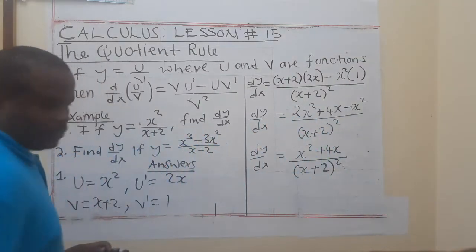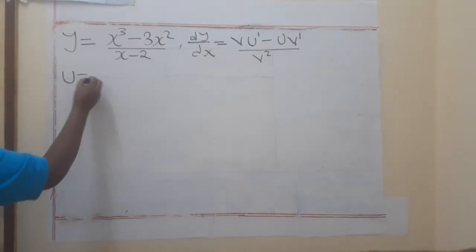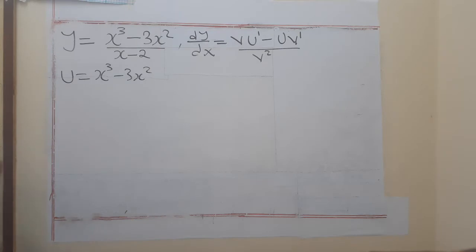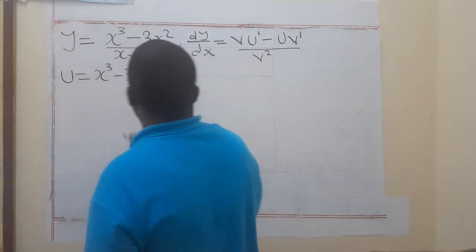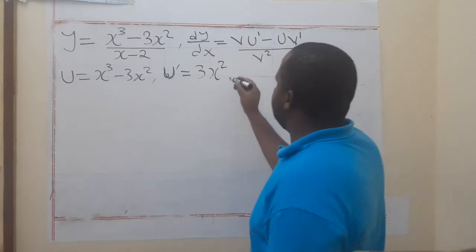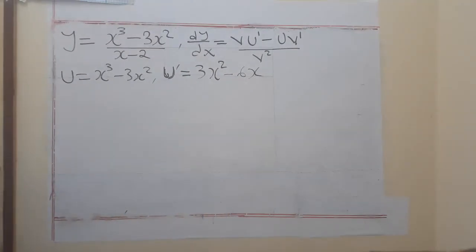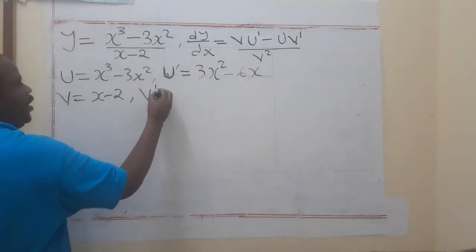For the second one, we apply the same formula. Our u is equal to x to the power 3 minus 3x squared. This implies that u prime, by differentiating u with respect to x, we have 3x squared minus 6x. Then our v, the denominator, is x minus 2, so v prime is equal to 1.